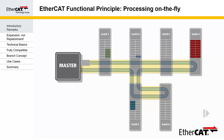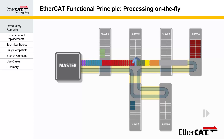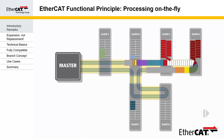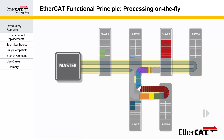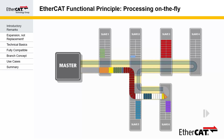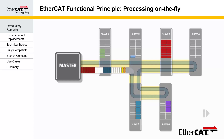Instead of sending one frame with the output data to each node and receiving an input frame with the input data from each node, the master sends one frame through all the nodes and each node extracts its output data from that frame and inserts its input data into the very same frame. In doing so, they use the bandwidth of this frame twice. Furthermore, all the nodes share one overhead. This makes the application data ratio incredibly high and the performance of EtherCAT extremely fast.